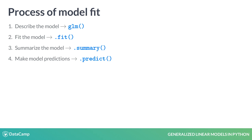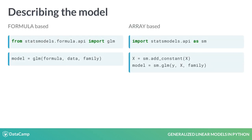There are two ways to describe the model: using formulas or arrays. If you're familiar with R language, you will appreciate the ability to fit a GLM using R-style formulas. StatsModels uses the Patsy package to convert formulas and data to the matrices used in model fitting. Note that if you are using the array-based method, the intercept is not included by default. You can add it using the addConstant function. For this course, we will use the formula-based method.